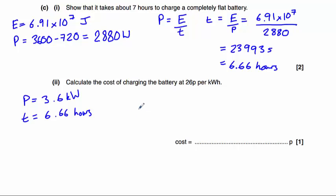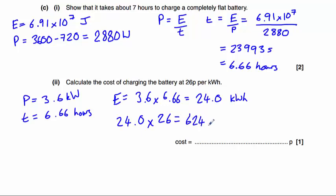We know that the time is 6.66 hours, therefore the energy in kilowatt hours is 3.6 times 6.66, which gives us 24.0 kilowatt hours. And at 26 pence per kilowatt hour, that's 24.0 times 26 equals 624 pence.